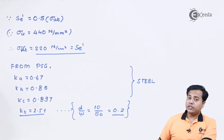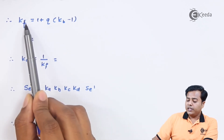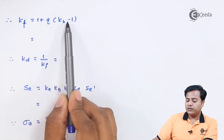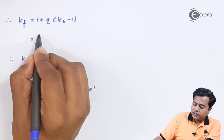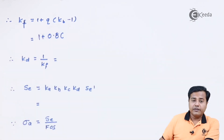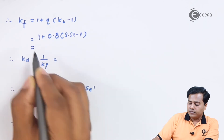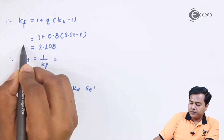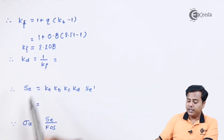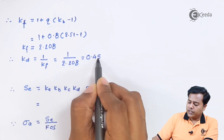The stress concentration factor KT feeds into the fatigue stress concentration factor KF using the equation: KF = 1 + q(KT − 1). Substituting q = 0.8 and KT = 2.51, the expression becomes 1 + 0.8 × (2.51 − 1), and accounting for the relationship between the fourth correction factor KD and KF, the resulting value comes out to approximately 0.4529.